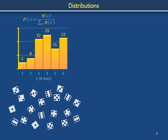It is conventional to divide each of the numbers of outcomes — here 5, 8, 22, 25, 15, and 23 — by their sum, by the total number of trials, here 100. The normalized quantities, 0.05, 0.08, 0.22, and so forth, are called the probabilities or frequencies, capital P. These decimal quantities add up to unity.